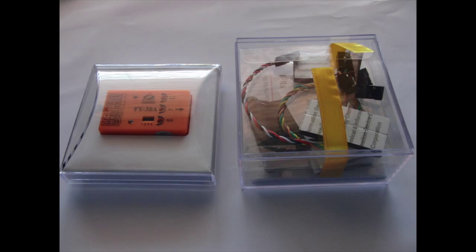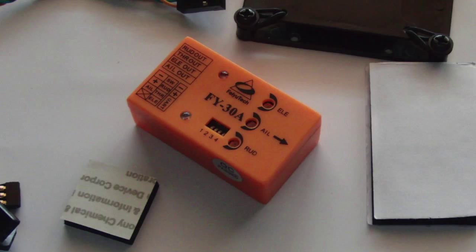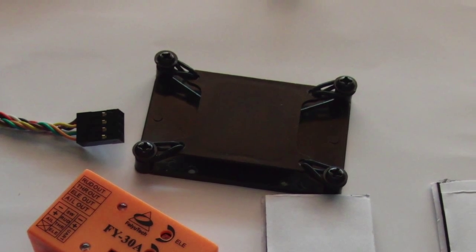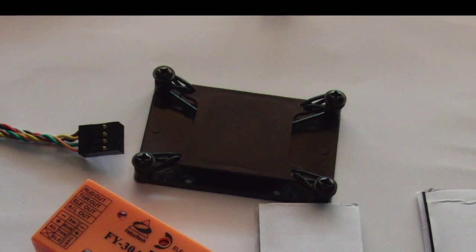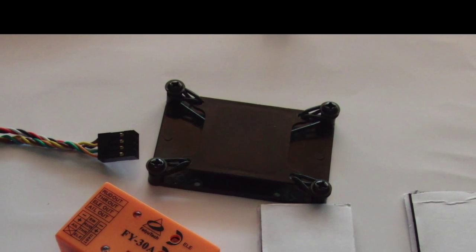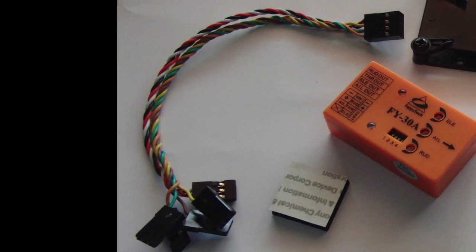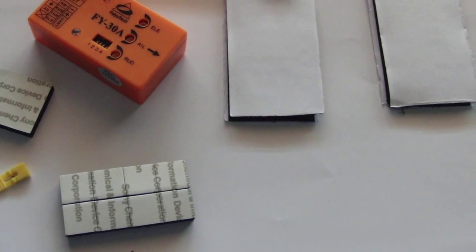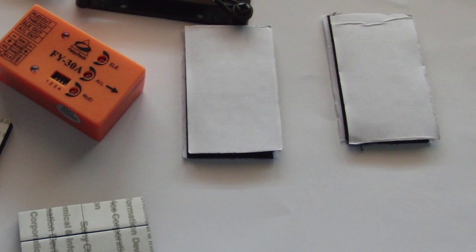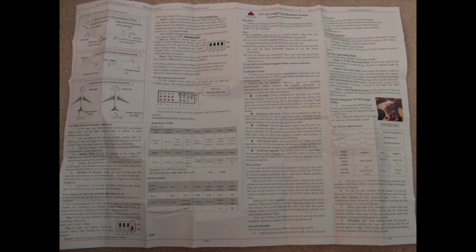Here's what comes in the package, and here's all the stuff out of the box. This orange box is the FY30A itself, and this is a vibration absorbing mount that you can mount it to. Here is a cable that goes from the FY30A to your receiver, and these are some sticky adhesives to mount it. Here are the instructions. They're double-sided and very helpful, telling you all the information about the product.